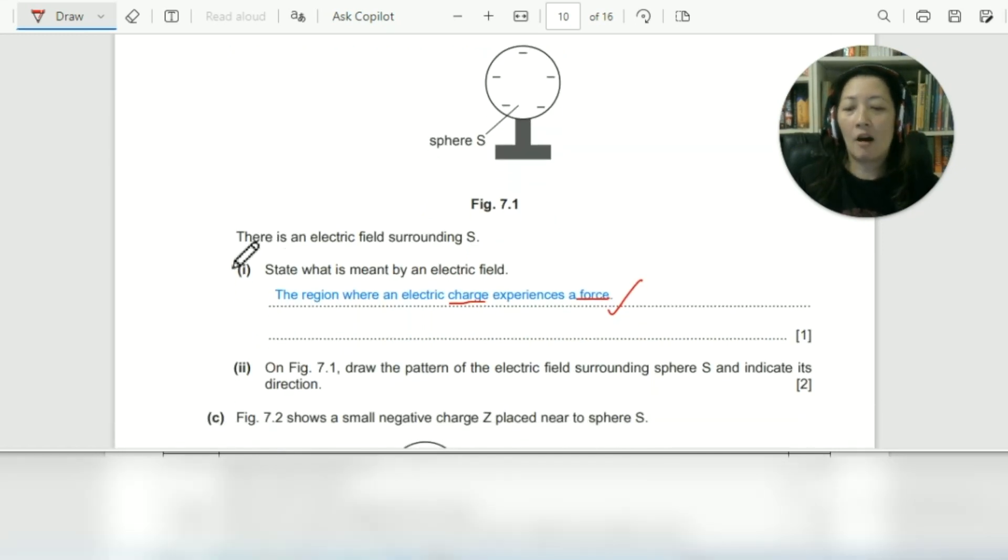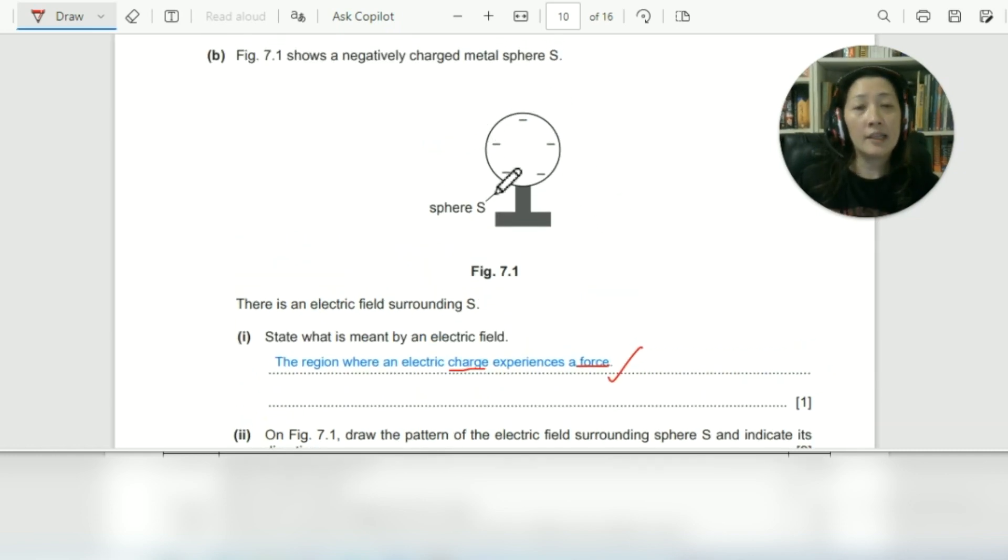Next. On figure 7.1, draw the pattern of the electric field surrounding sphere S and indicate its direction. So for this question, you just need to draw the pattern of an electric field. Like how you would draw the pattern of electric field around a circular charge. This is a sphere, so you just draw the electric field with lines as if you're drawing around a single charge. It's negative, so all the lines should be pointing inwards. So yes, you must draw the arrows as well.